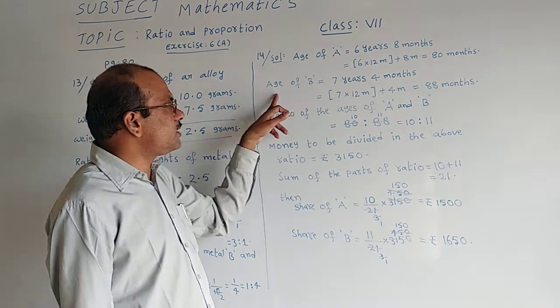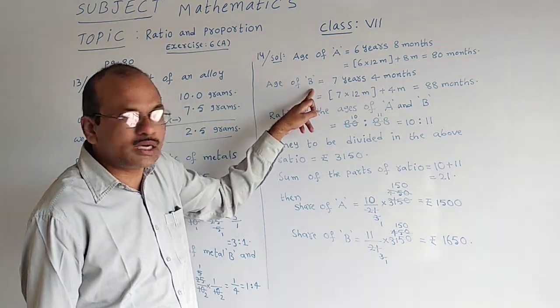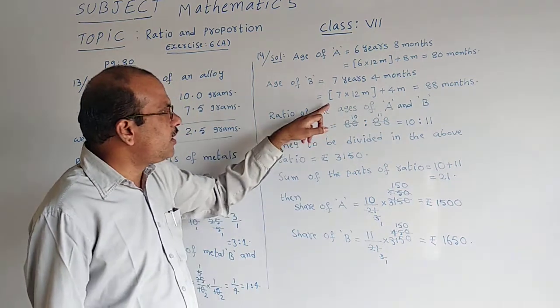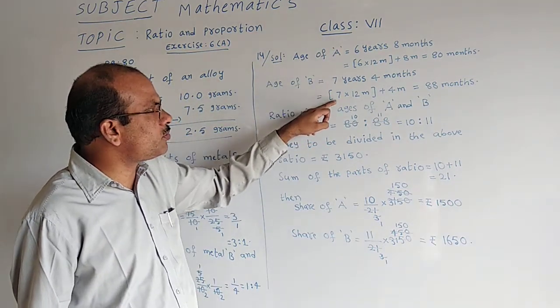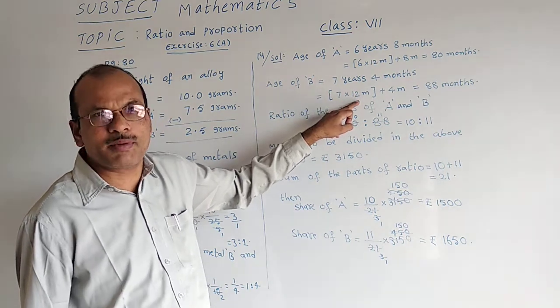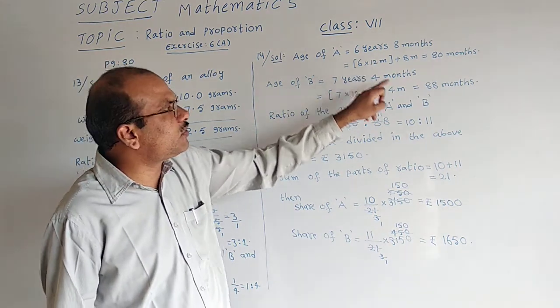Same way, age of person B they said 7 years 4 months. As we said earlier, in 1 year 12 months. Here 7 years means 7 into 12 months, plus that 4 months.